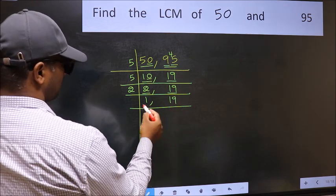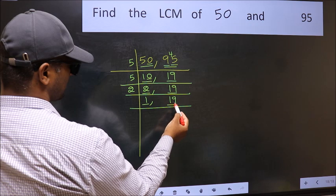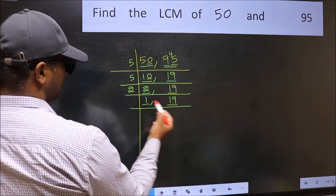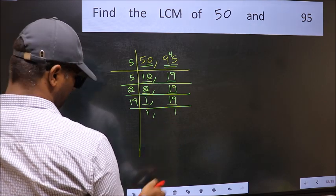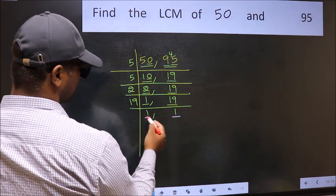Now we got 1 here. So focus on the next number 19. 19 is a prime number so 19 once is 19. So we got 1 in both places.